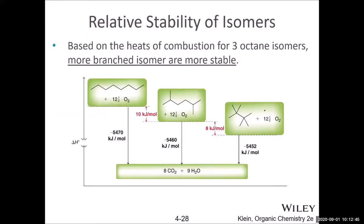The stability of isomers can be determined from the heat of combustion, which lets us find the enthalpy of formation (ΔHf) for each compound. From heat of combustion data, the non-branched hexane has the highest heat of combustion, meaning it has the highest energy. The more branches among the isomers, the lower the enthalpy of combustion, which means the more stable the molecule.